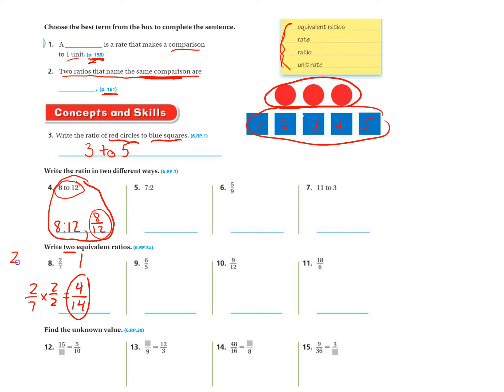And then I take that same ratio again. And this time I'm going to choose three. It's going to be two times three is six. Seven times three is twenty-one. So six over twenty-one.